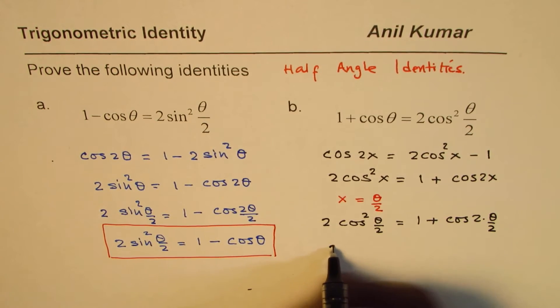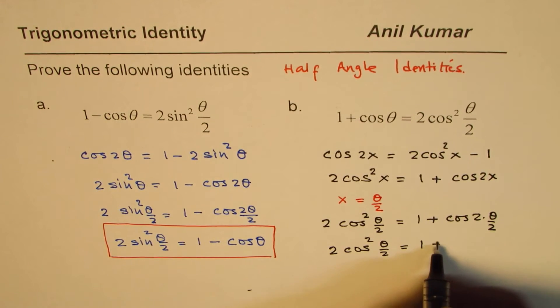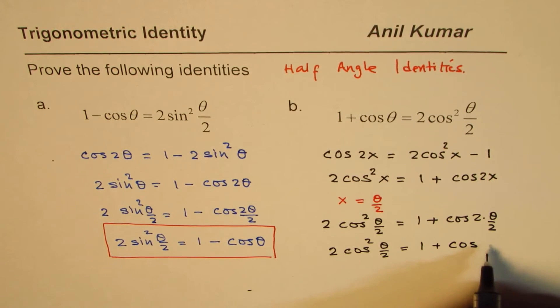And that gives me 2 cos square theta by 2 equals to 1 plus cos theta. So you get the formula which you wanted.